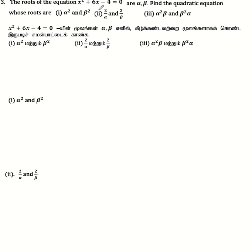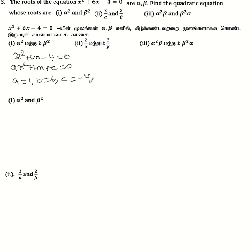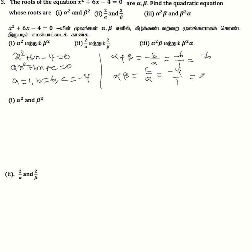The roots of x² + 6x - 4 = 0 are alpha and beta. Comparing with ax² + bx + c = 0, we get a = 1, b = 6, c = -4. So the sum of roots, alpha + beta = -b/a = -6, and the product of roots, alpha·beta = c/a = -4.